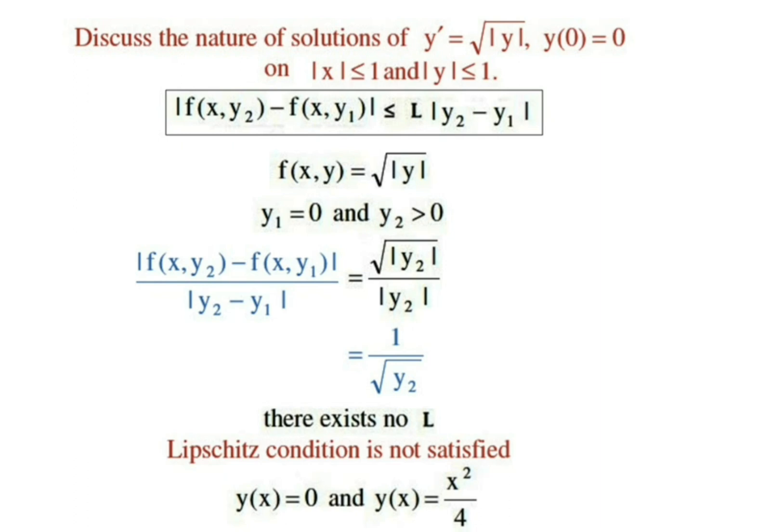Here, the continuity of the function f(x,y) is not sufficient for the existence of unique solution to the initial value problem. This is our main conclusion for the discussion on nature of solution to this particular initial value problem: y' = √|y| with y(0) = 0.